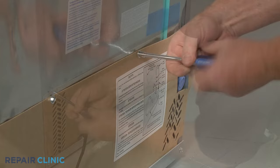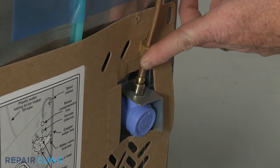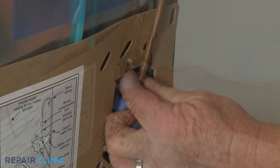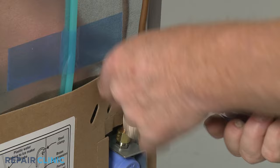If required, reattach the water supply line to the inlet valve by threading the compression nut. Avoid over-tightening the nut. Slide on the retainer, if applicable, and secure it with the screw.